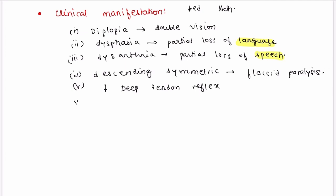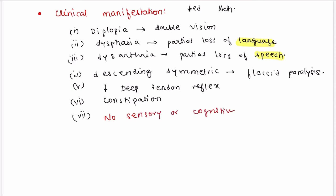The next manifestation is constipation. There are no sensory or cognitive deficits — sensory and cognitive functions remain normal. Lastly, due to flaccid paralysis, the diaphragm can also be paralyzed, which can result in death.